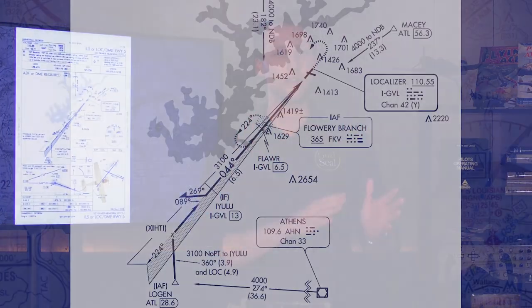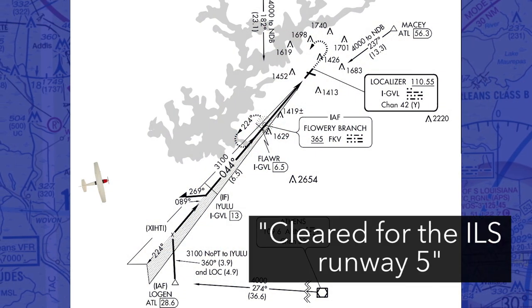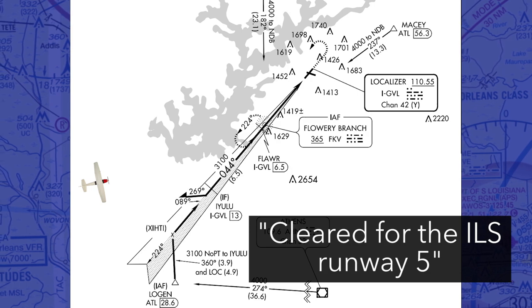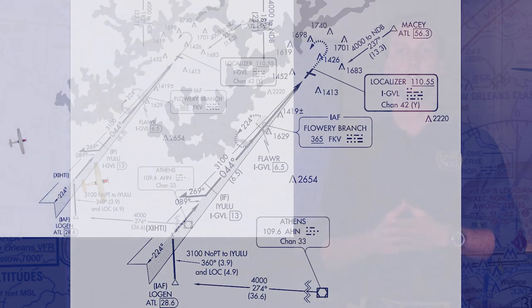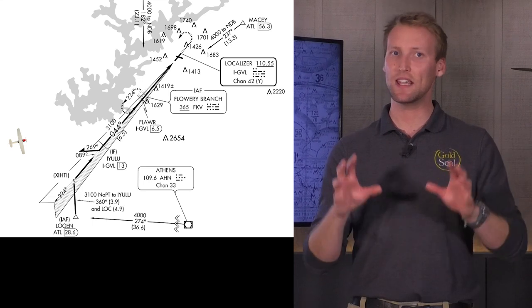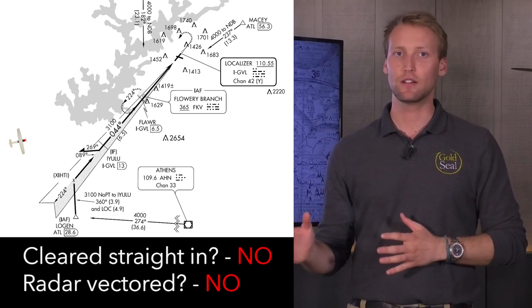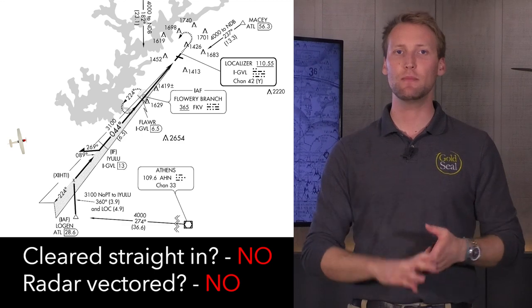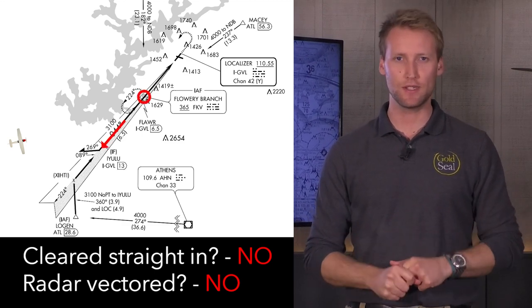Let's say we're flying into Lee Gilmore Airport in Georgia. We're coming in from the west, and we've been cleared for the ILS runway 5. We've been cleared for the approach, but since they didn't explicitly say cleared straight in, and we're not being radar vectored, we're still required to fly inbound to the initial fix and fly the procedure turn.